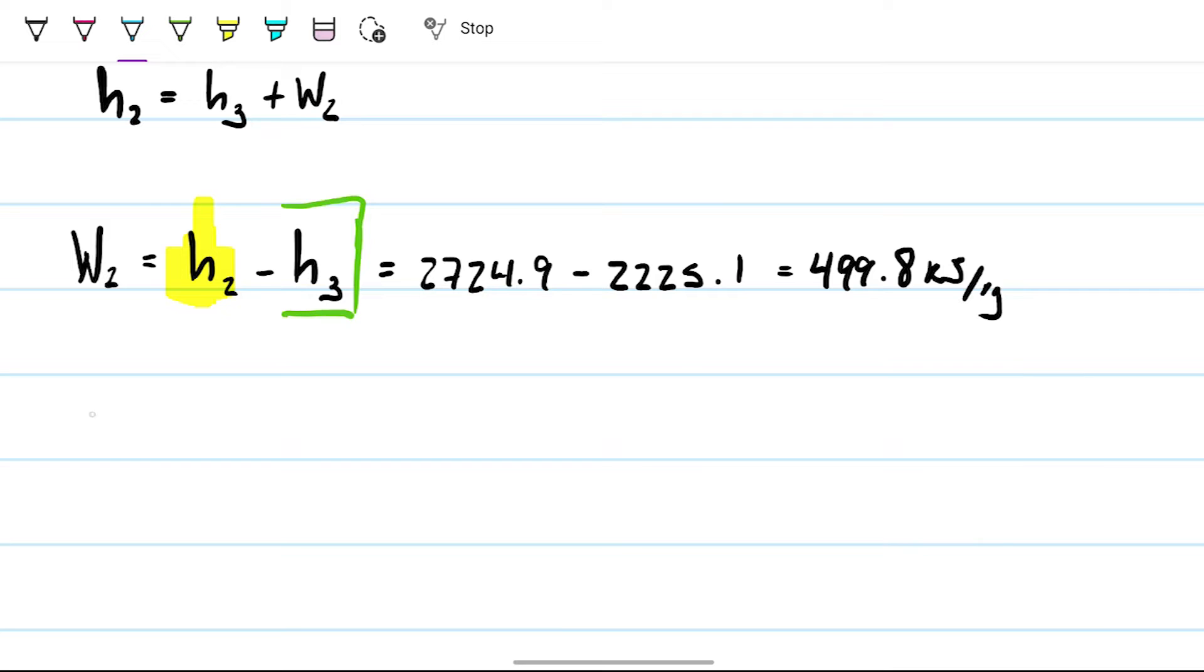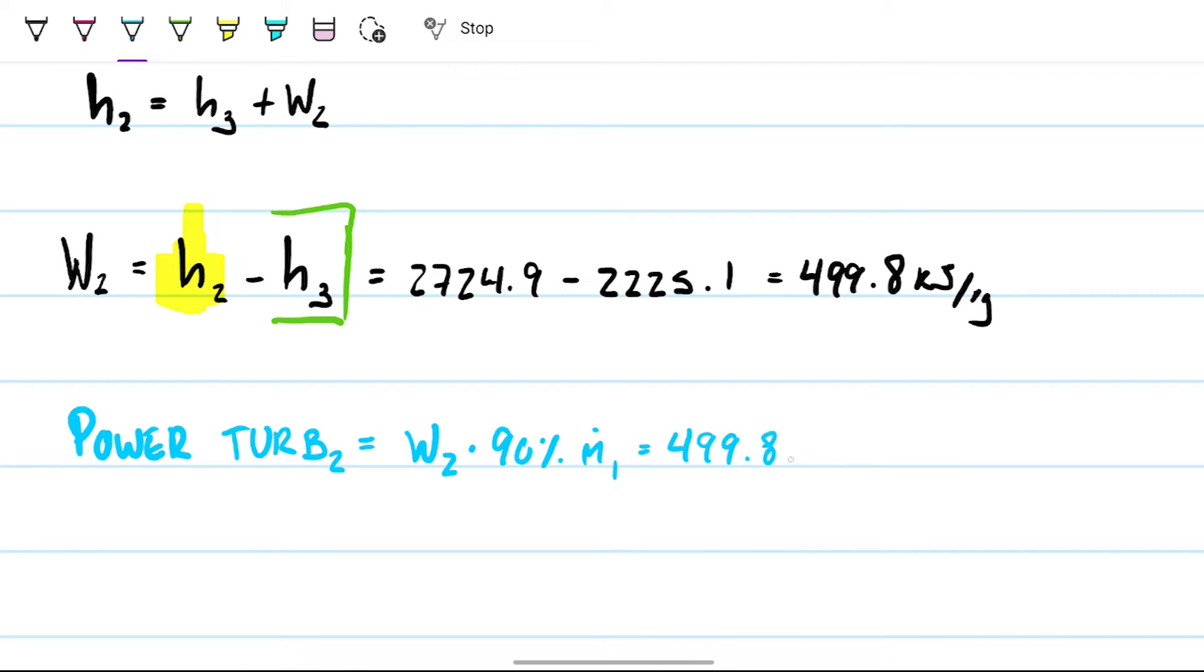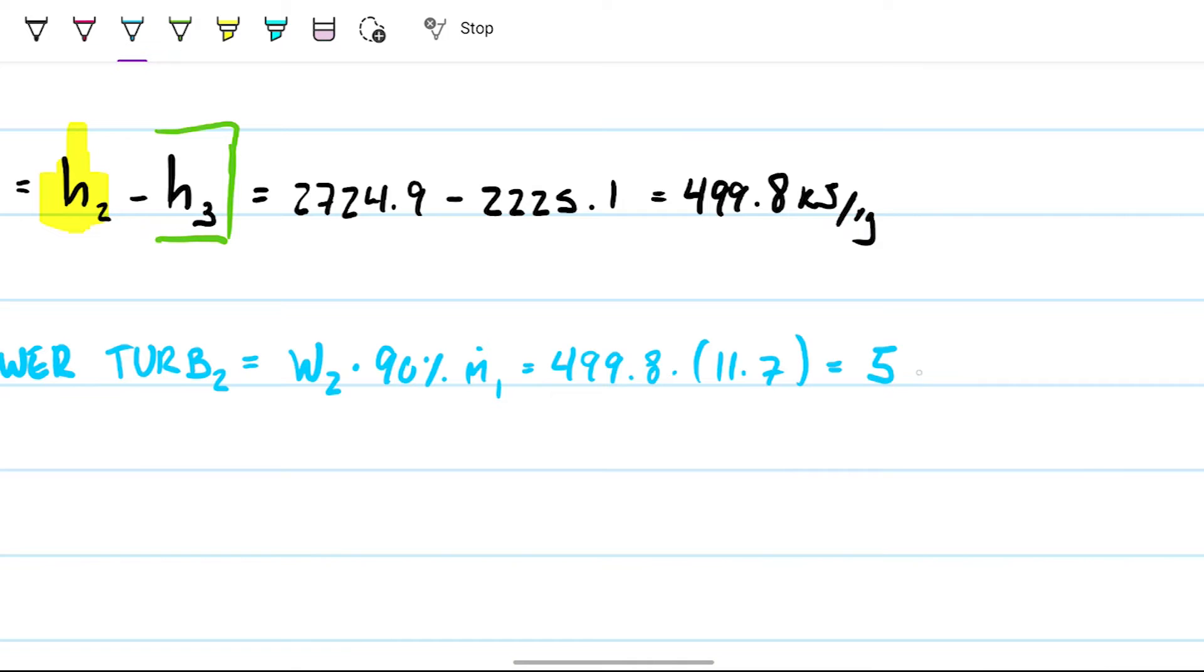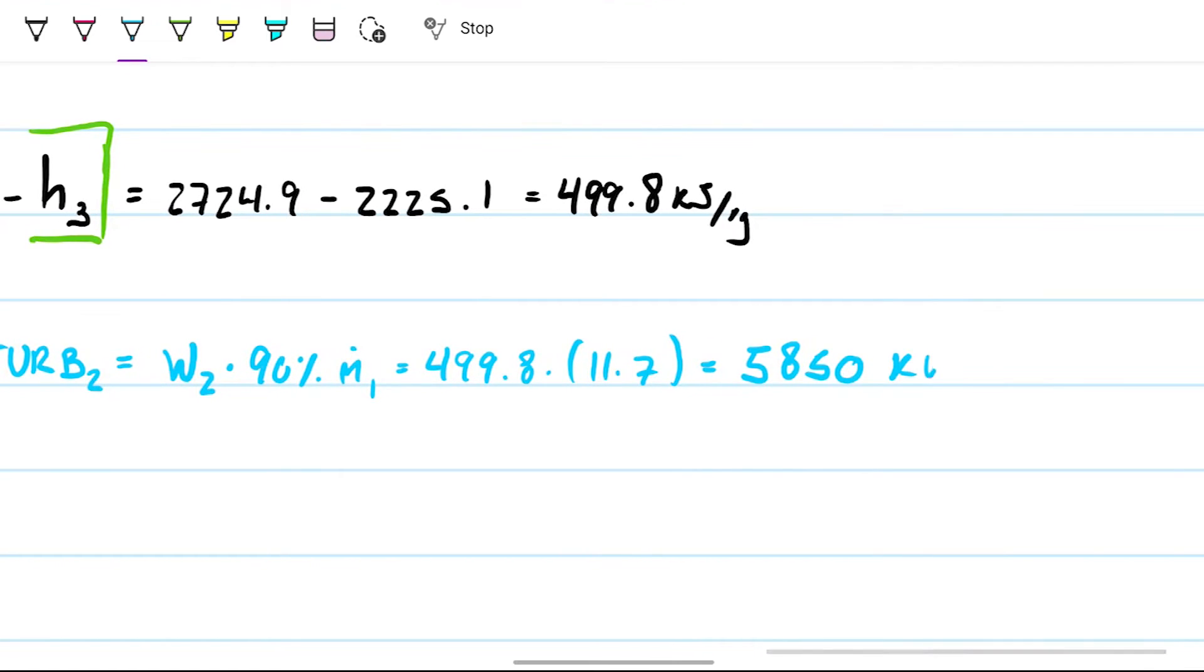Once again, I want to eliminate this and I want to be left with watts. So I need to multiply by the mass. And this is where we could go wrong, because if we multiply by 13, that's not the mass that's going through turbine 2. Rather, what's going through turbine 2 is just 90% of that 13. So that's going to be w2 times the 90% of mass flow rate one. In other words, that will be my 499.8 times my 11.7, and this turns out to be 5,847.66 kilowatts.